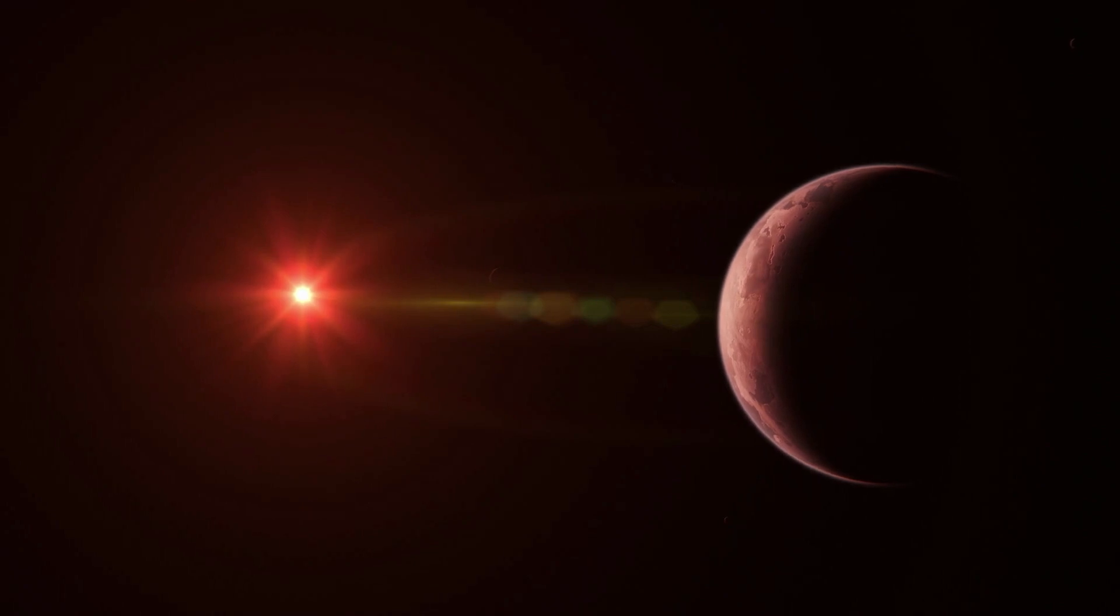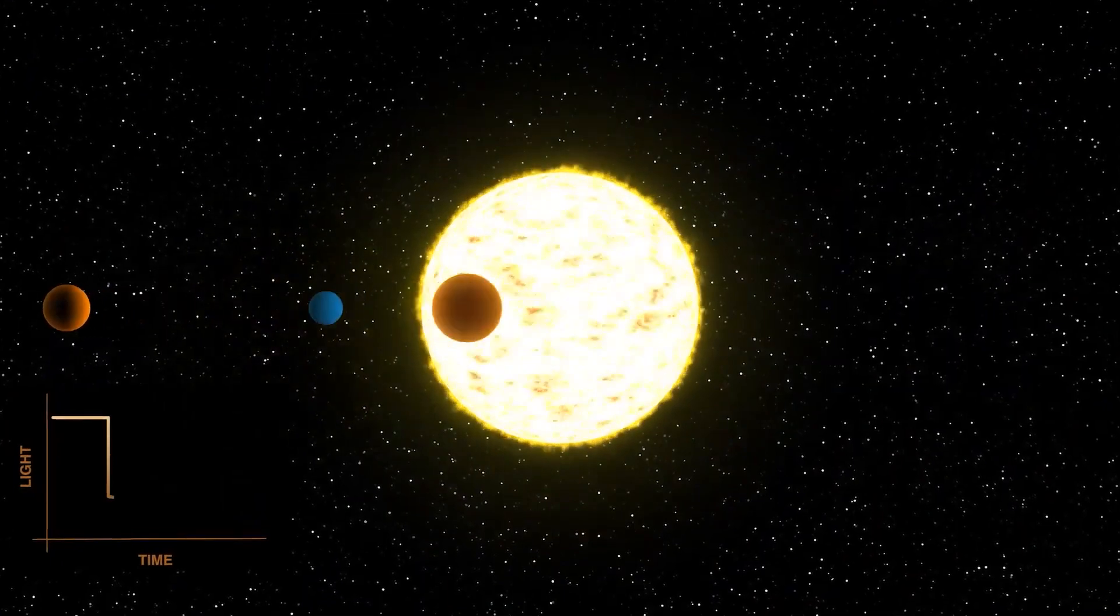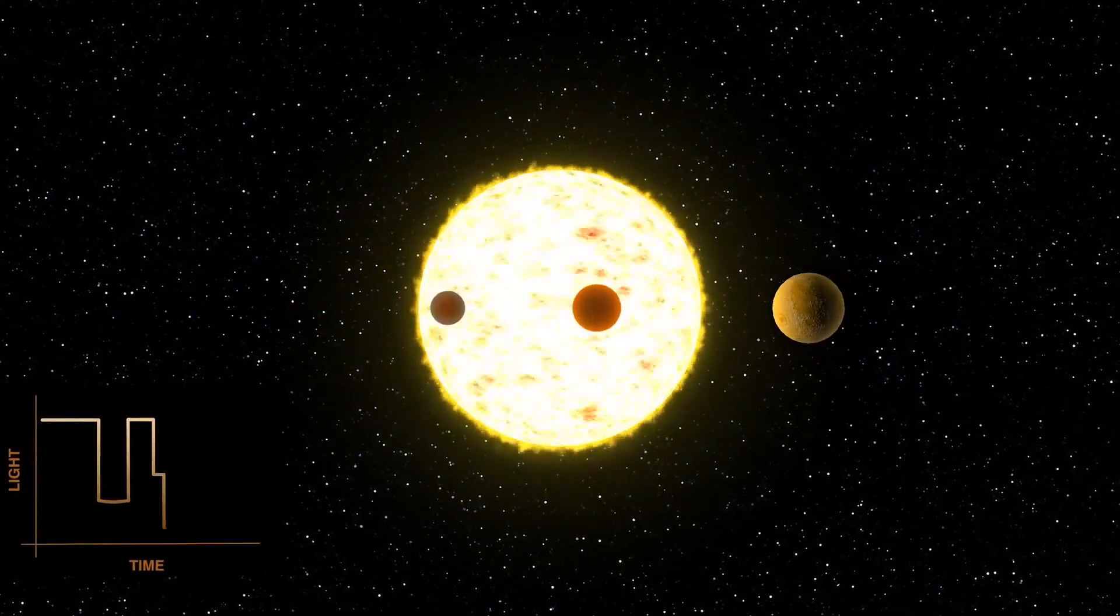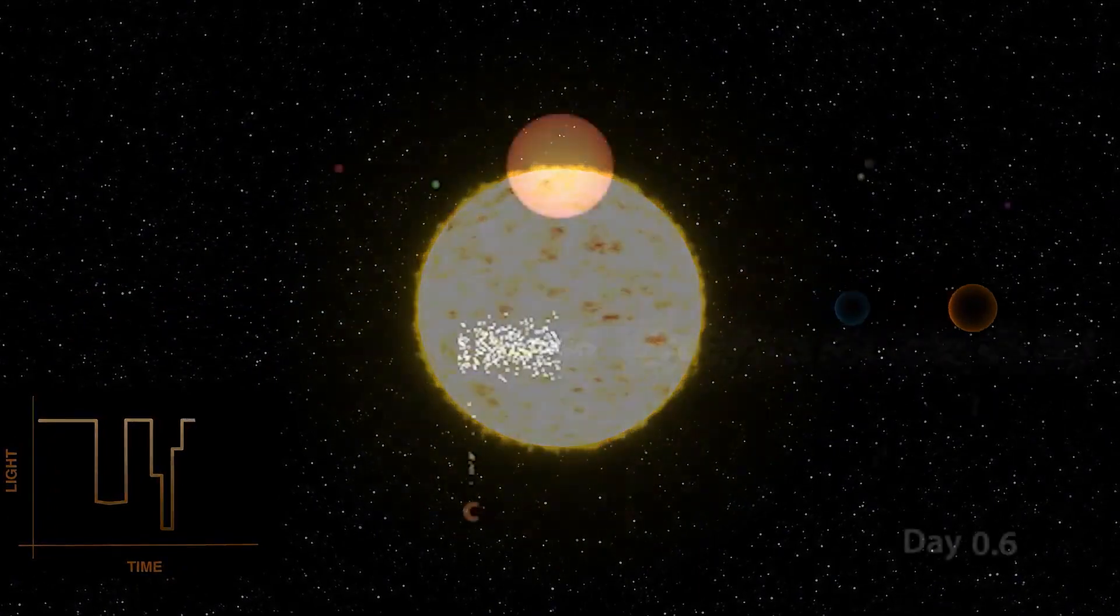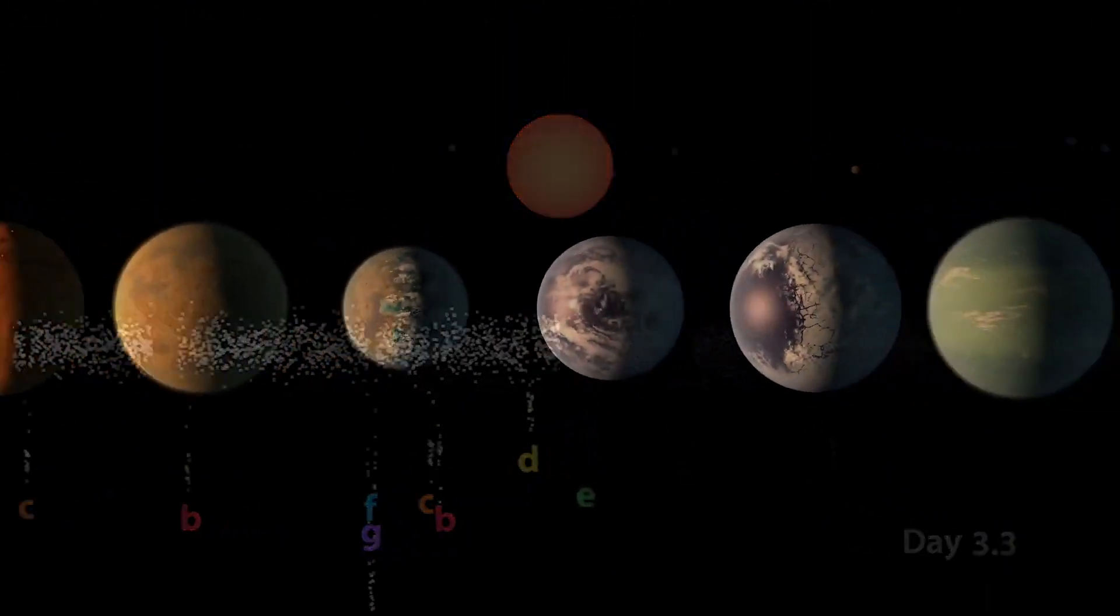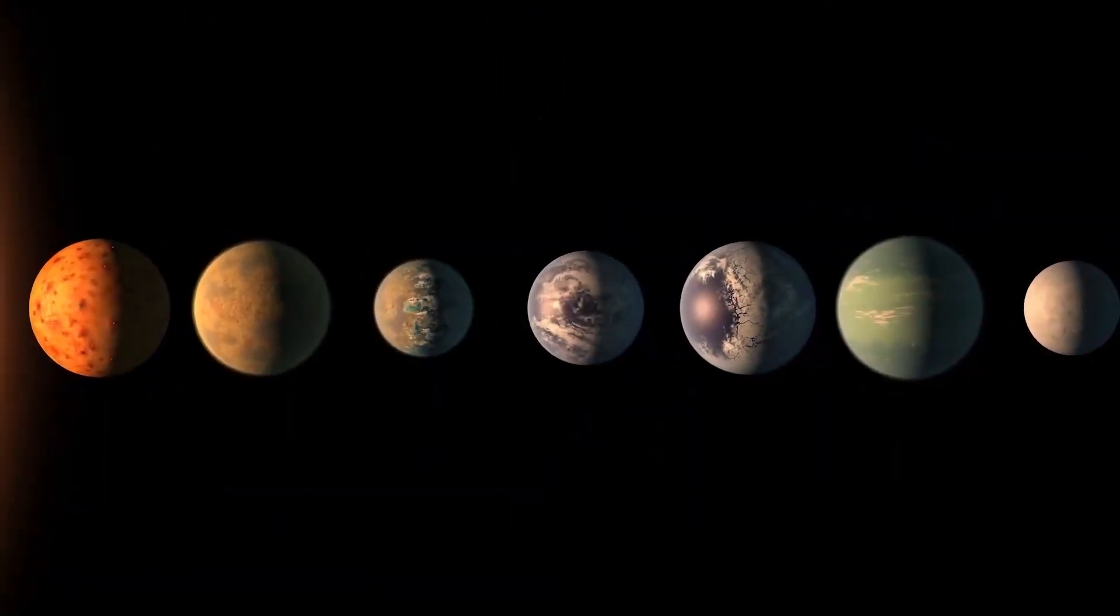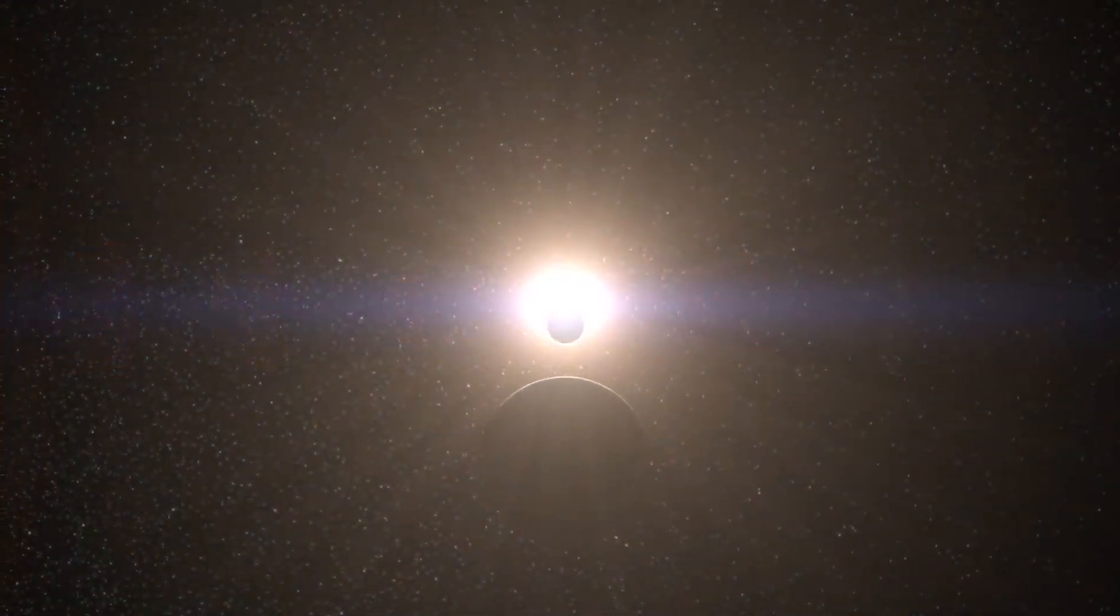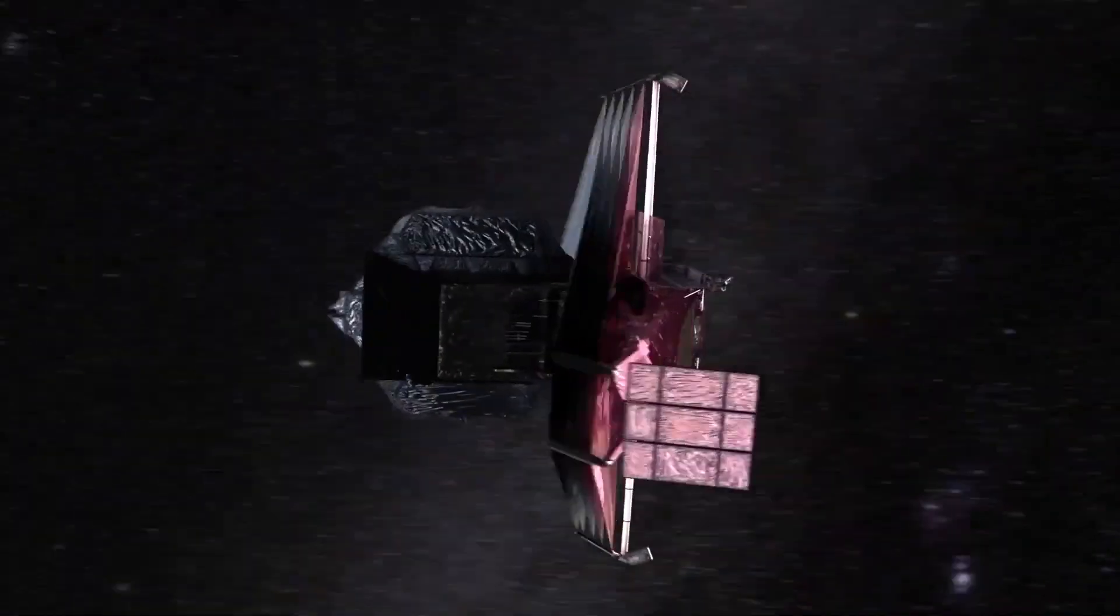TRAPPIST-1e will be observed by James Webb five times during its passage. The study team will use Webb to look for evidence of atmospheres and to look at the surface composition as these planets pass behind their stars. It could be a real tour de force for mapping the atmospheres and, in some cases, even the surfaces of these planets around other stars.